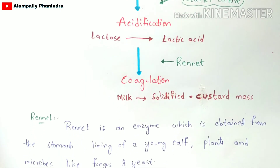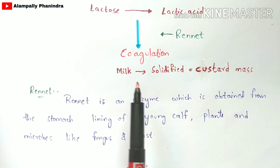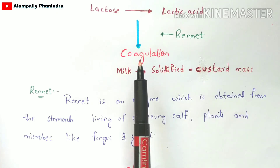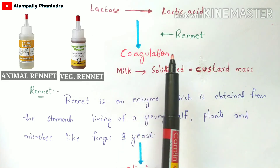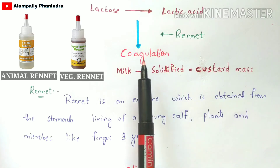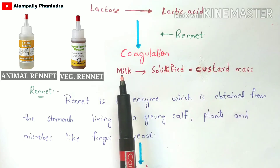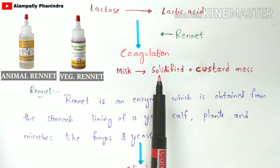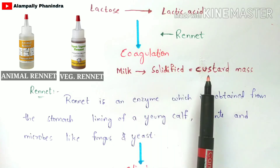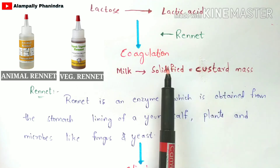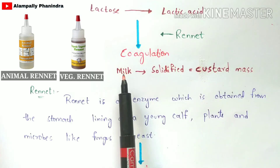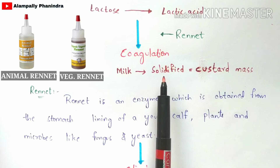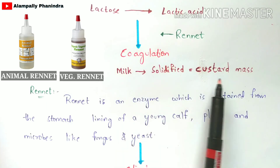After acidification comes coagulation — that is the casein coagulation. You are going to add rennet into the acidified milk, i.e., into the lactic acid milk. When you add this rennet, the milk in liquid form gets converted into solid form, solidifying and forming a custard mass. Once rennet is added, the casein proteins present in the milk get coagulated such that the liquid milk becomes solid and forms a custard mass.